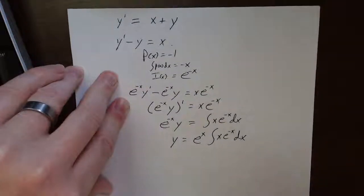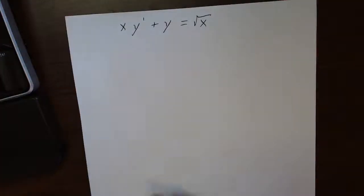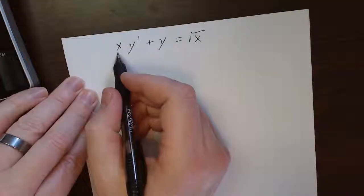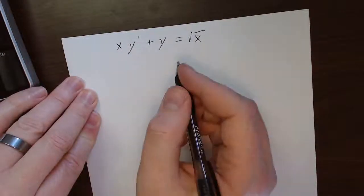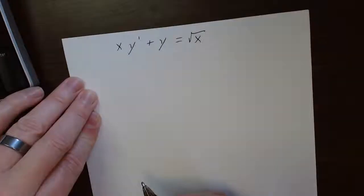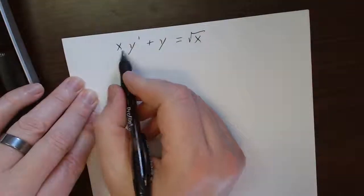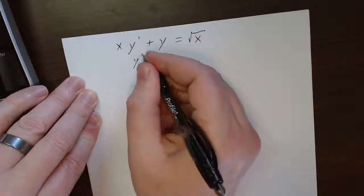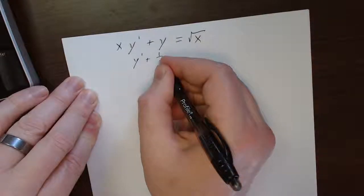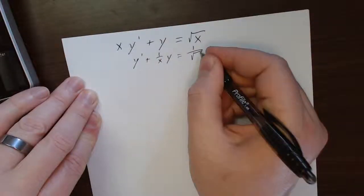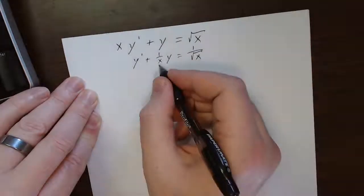Let's do one more. Oh, now we've got something in front of the y prime. No problem. We'll divide by it. But we just know then that we're not allowing x to be zero. So, I divide by it and I get what? y prime plus 1 over x, y is equal to 1 over the square root of x. There's my p of x.